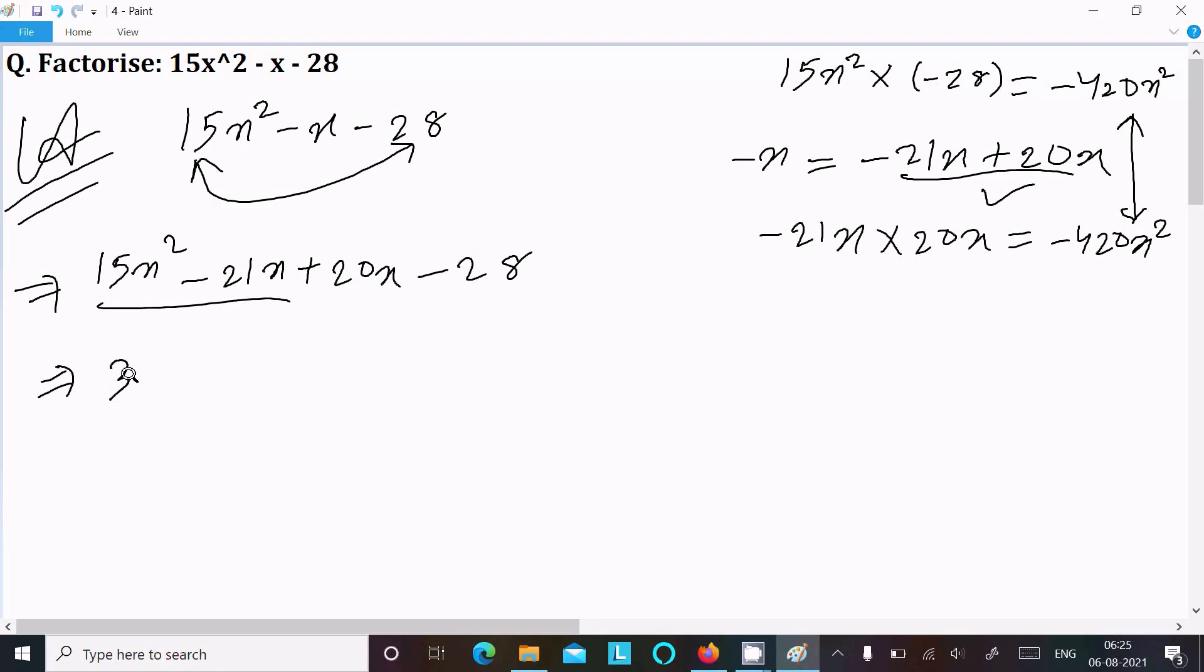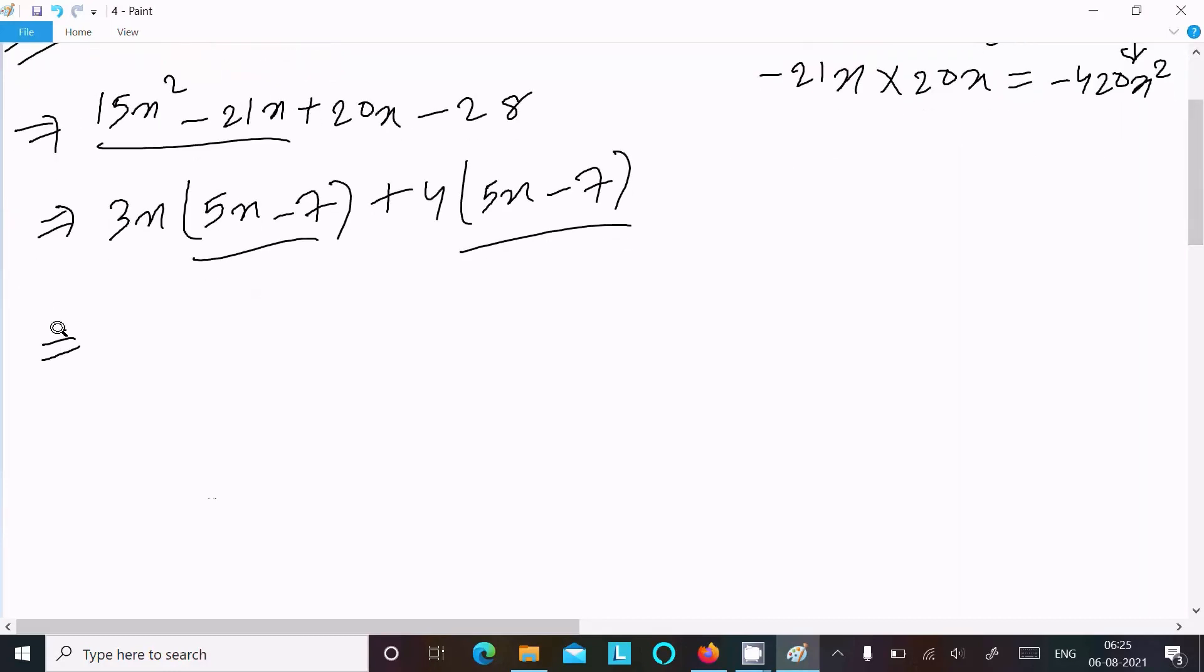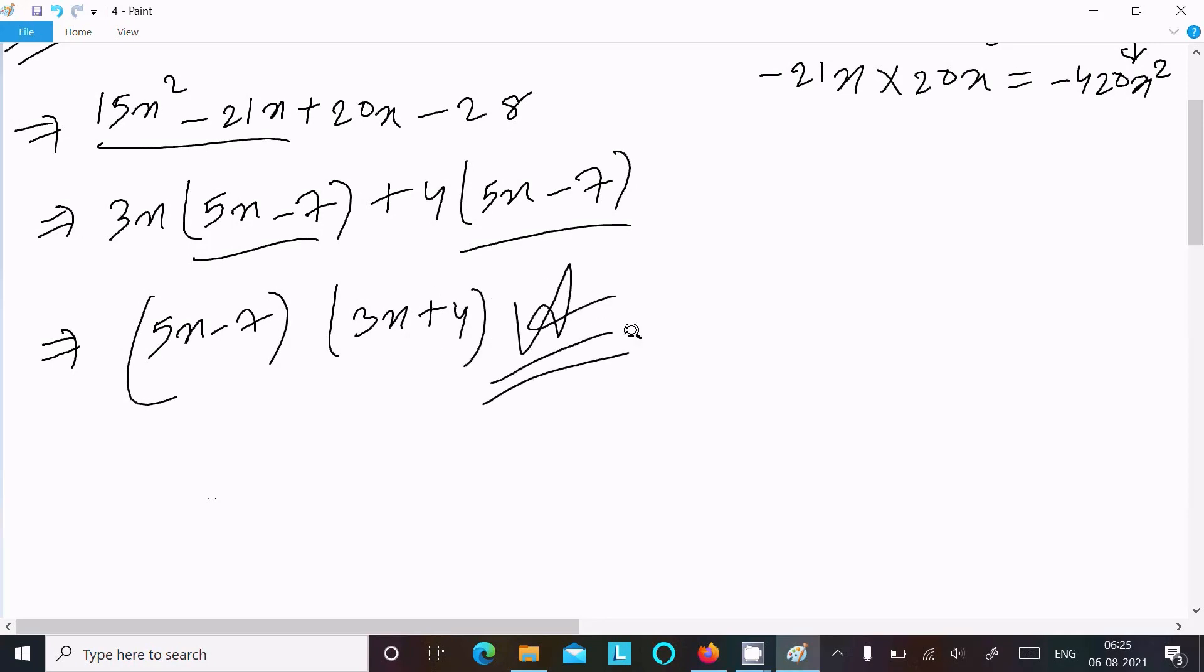Take the common 4, so this you get 5x - 7. So 5x - 7, 5x - 7, take the common, so writing here 5x - 7 and next 3x + 4. So this is the answer of this equation.